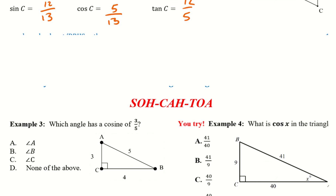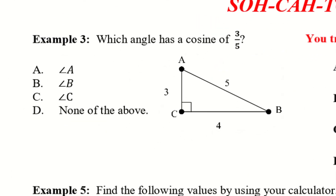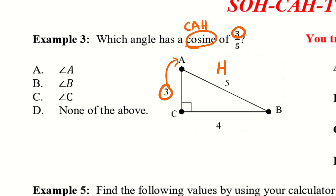Let's take a look at example 3. Which angle has a cosine of 3 over 5? If we're looking for cosine, remember that's CAH — adjacent over hypotenuse. The hypotenuse will always be 5, so we just have to figure out which is our adjacent. If 3 is the number we're looking for, 3 has to be adjacent, and the closest angle besides the 90-degree angle will be angle A. Therefore, angle A would give us a cosine of 3 over 5.